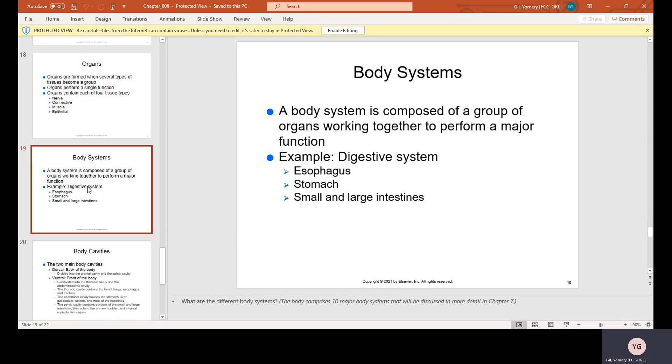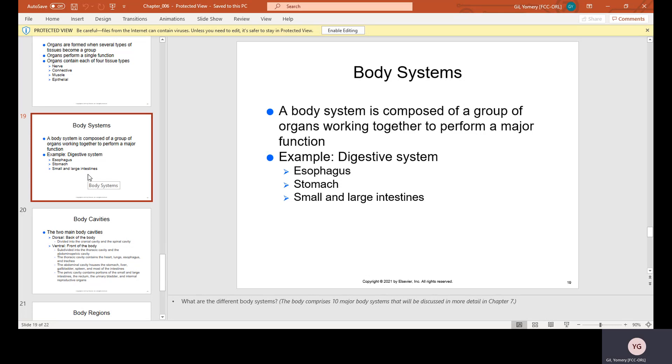The body system. A body system is composed of a group of organs working together to perform a major function. For example, the digestive system includes the esophagus, the stomach, the small and the large intestines.